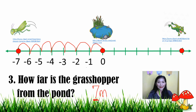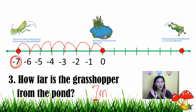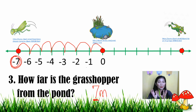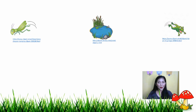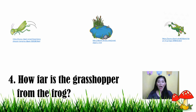You may wonder why the answer is seven when the grasshopper is found on negative seven. When we speak of absolute value, it doesn't necessarily mean where the number lands on the number line. Absolute value is always determined by the distance, so therefore it is always positive. Even if the grasshopper goes to negative four, the answer will always be positive four.